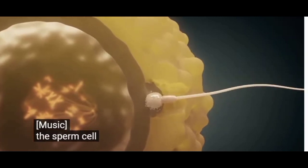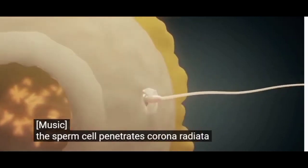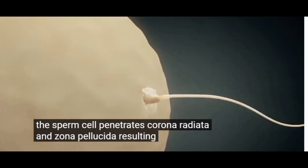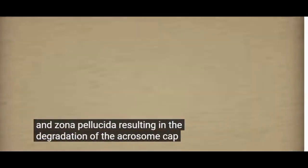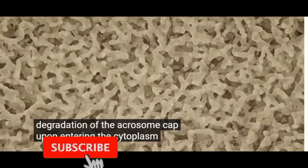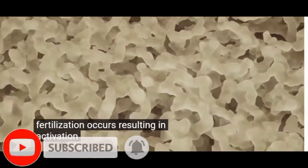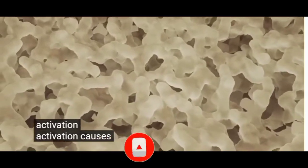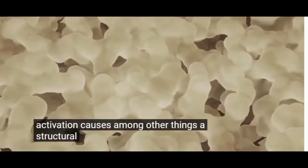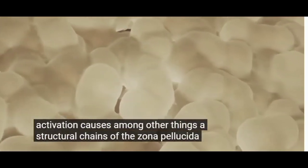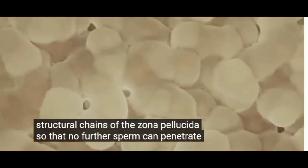The sperm cell penetrates Corona radiata and zona pellucida, resulting in the degradation of the acrosome cap. Upon entering the cytoplasm, fertilization occurs, resulting in activation. Activation causes, among other things, a structural change of the zona pellucida so that no further sperm can penetrate.